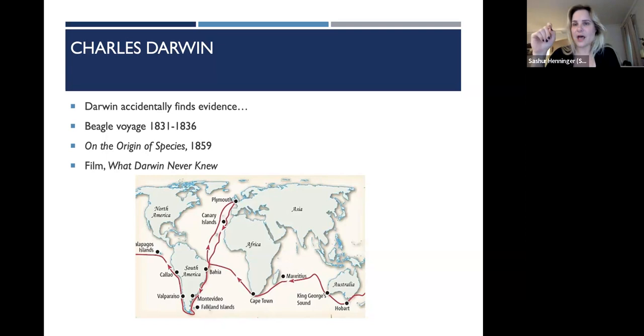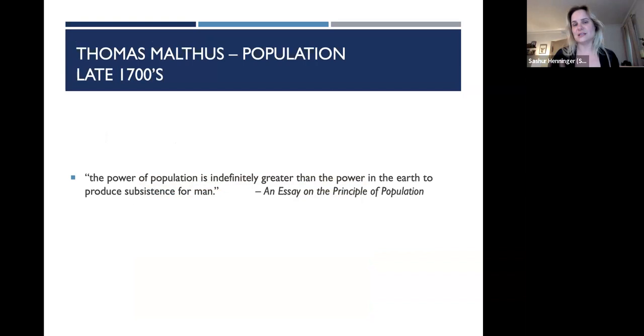As he is thinking about this information on this five-year journey and looking at all of this evidence, he's reading Thomas Malthus's work, and he's going back to this quote: the power of population is indefinitely greater than the power in the earth to produce subsistence for man. And a light bulb goes off. He comes to this answer. What's the driving force in the wild for these animals' changes? And it's competition for resources.